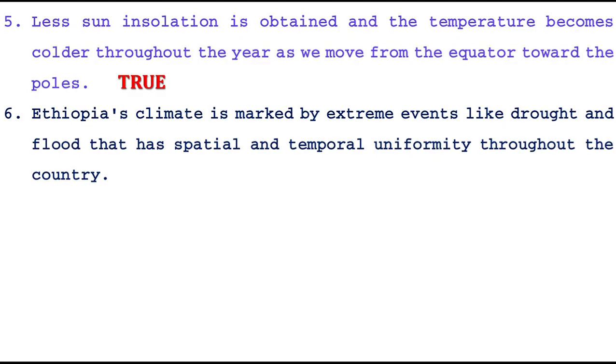Ethiopia's climate is marked by extreme events like drought and flood that has spatial and temporal uniformity throughout the country.